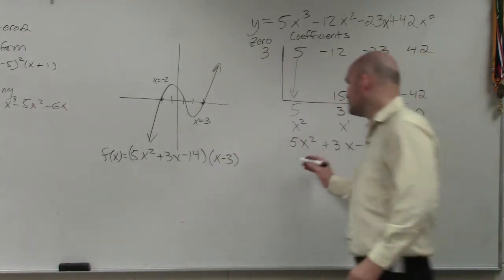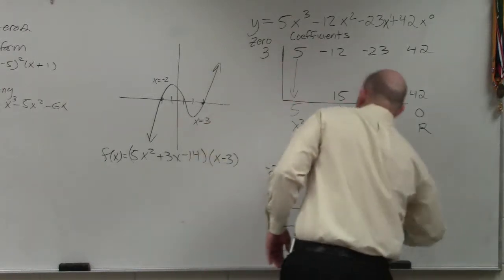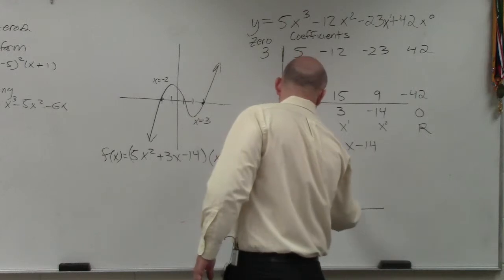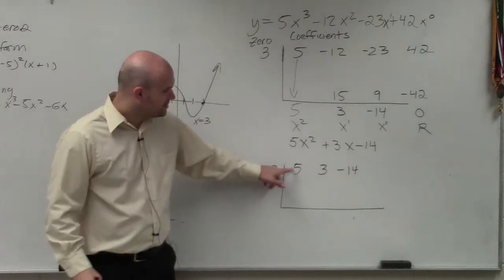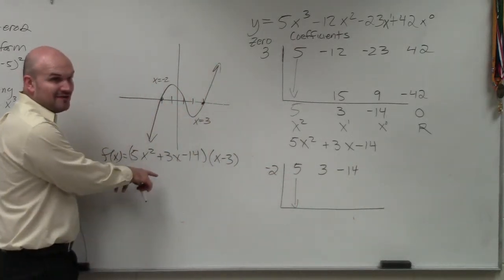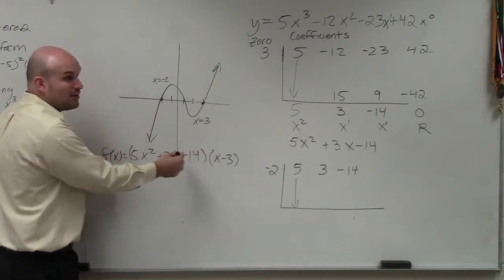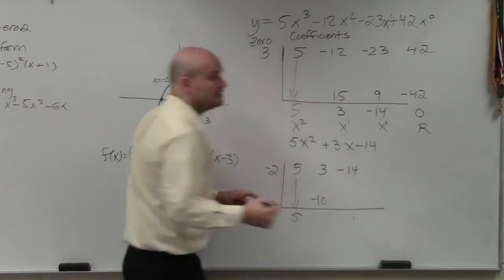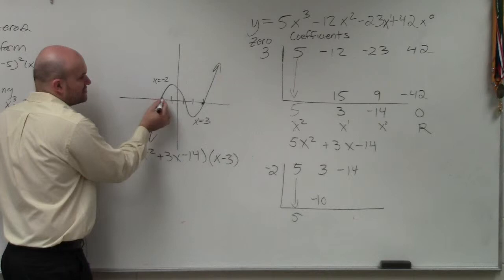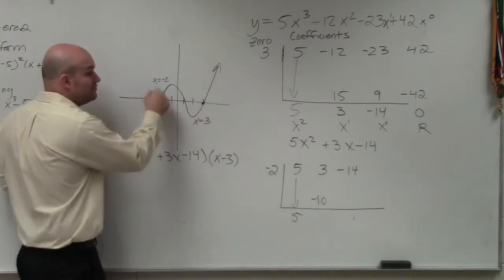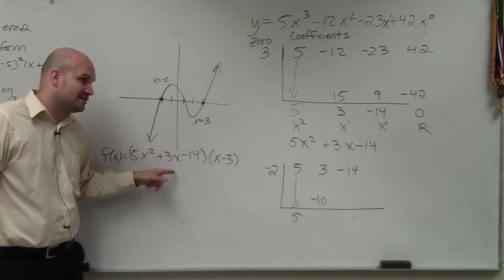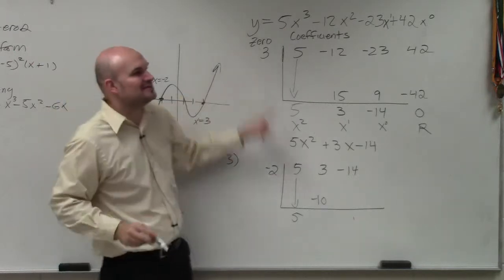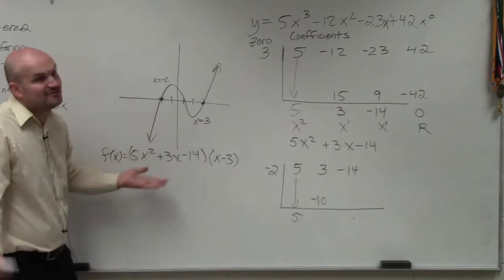So now I'm going to take my other zero, which was negative 2, and now I'm going to use the coefficients of my quotient from the first division. So I'll do 5, 3, and negative 14. Now, there's nothing wrong with trying to factor this — if you know how to factor that or know the factored formula, factor it so you can solve it. Or if you like the quadratic formula, do that. But since I gave those zeros to you, or I had a graphing calculator, I know those are my two zeros, so I could do this application twice.